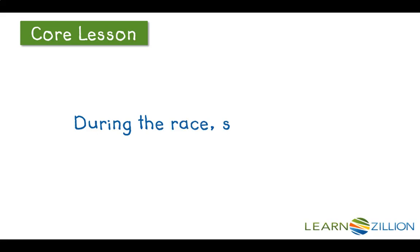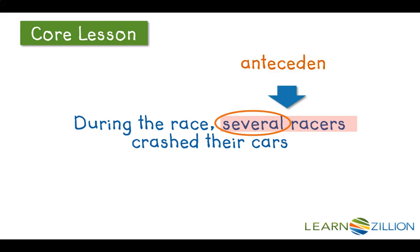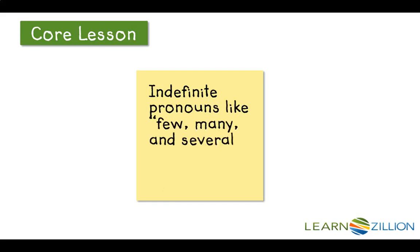'During the race, several racers crashed their cars.' Who crashed the cars? This is our antecedent: 'several racers.' Racers is plural, and the word 'several' is plural as well, so our antecedent is plural and we need a plural pronoun. 'Their' is a plural pronoun, so we have agreement here. Indefinite pronouns like 'few,' 'many,' and 'several' are all plural words, and thus they need plural antecedent-pronoun agreement.